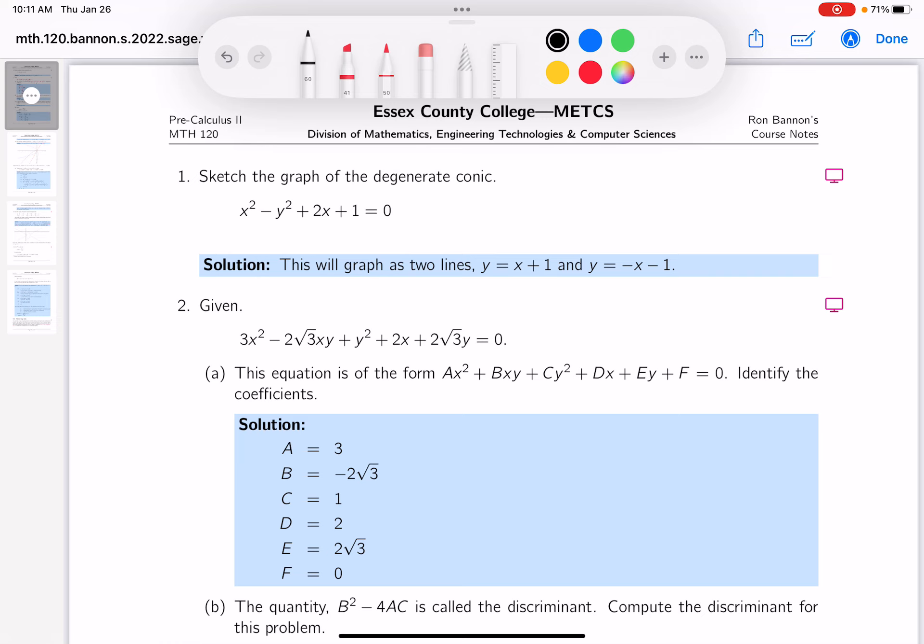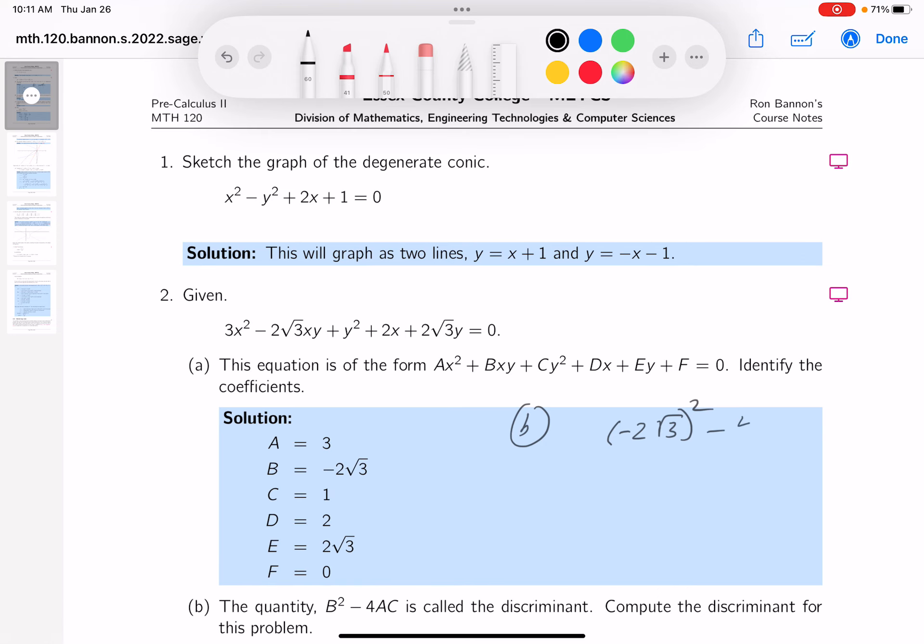It's going to be B squared. Well, I'm going to do that. That's going to be minus 2 root 3 squared. I'm squaring the big B. And then it's going to be minus 4. What's the A going to be? The A is 3. And what's the C going to be? Well, looking at it, the C is 1.